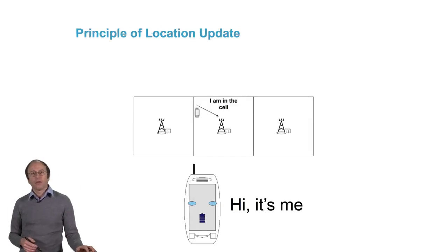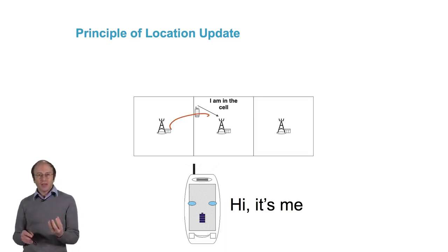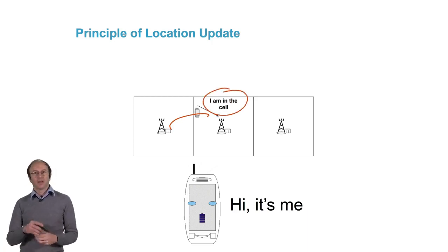Well, the first idea that comes to mind is to consider the principle of updating location. If we consider a terminal that's on the move, each time it changes cell, it could send a message to the network saying, now I'm in this cell, send my packets to this eNodeB.